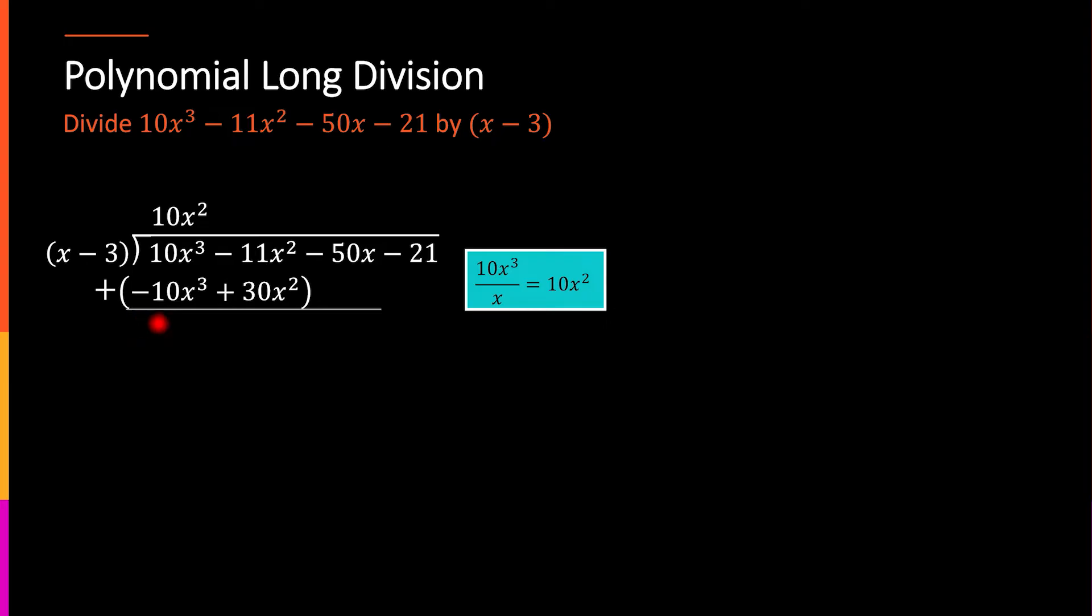So, this first part will cancel out because I have 10x³ plus negative 10x³. The whole point is that that difference is zero. And then the leftover piece, 19x², is the leftover piece.